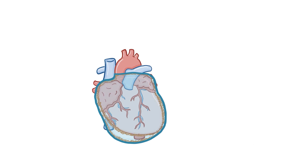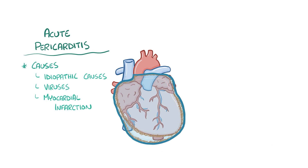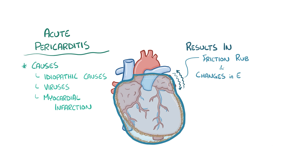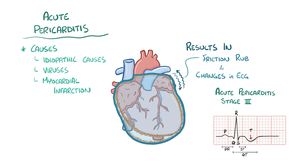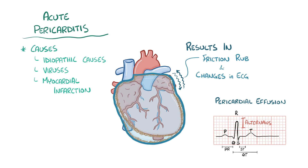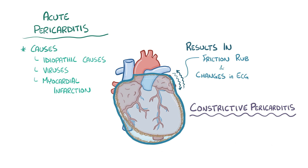As a quick recap: acute pericarditis is usually caused by idiopathic causes, viruses, or after a myocardial infarction. It usually results in a friction rub, as well as ECG changes like ST elevation and PR depression, followed by T-wave flattening and inversion. Pericardial effusions typically lead to low QRS voltages or electrical alternans, and can be seen on an echocardiogram. Constrictive pericarditis typically results from fibrin deposition in the serous pericardium and prevents the heart from fully relaxing.